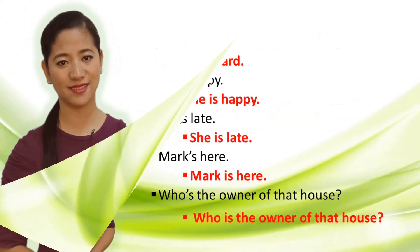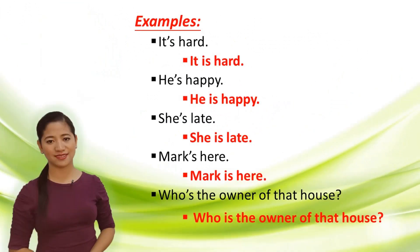Contraction: 'is'. Examples — It's hard, it means it is hard. He's happy — he is happy. She's late — she is late. Mark's here — Mark is here. Who's the owner of that house? — Who is the owner of that house?